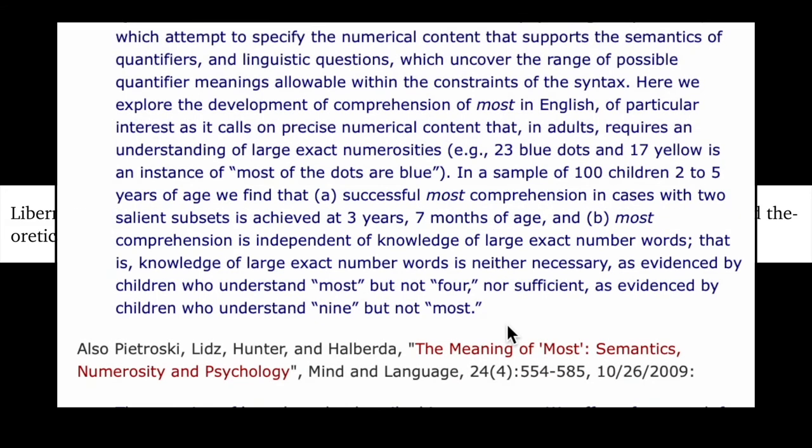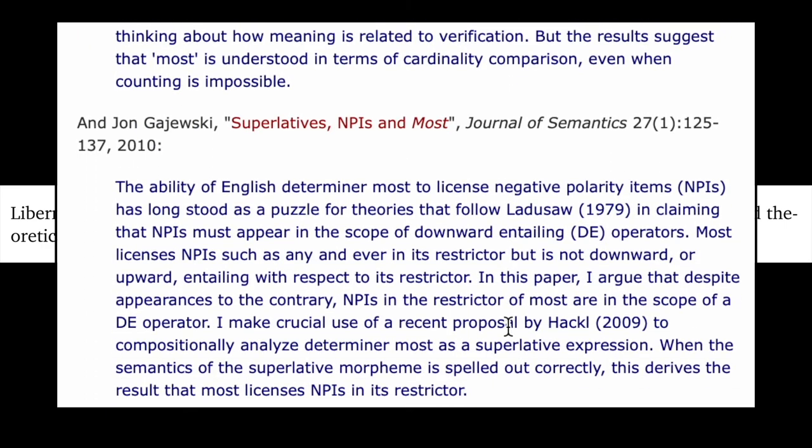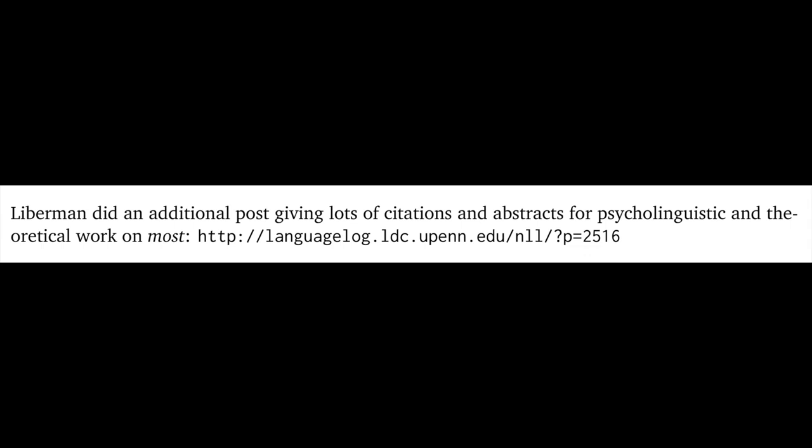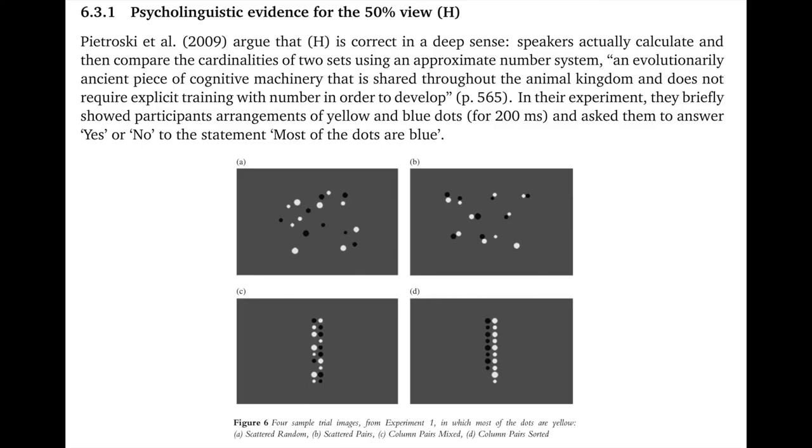One final note about Lieberman's post, he ended it with a lot of nice citations to work on most. So if you're contemplating possibly maybe doing something in this area for a final project, do check out what he lists there. I can't remember precisely, but that may have been where I first learned about the paper I want to touch on next: Pietroski, Lidz, Hunter, and Halberda, The Meaning of Most: Semantics, Numerosity, and Psychology.